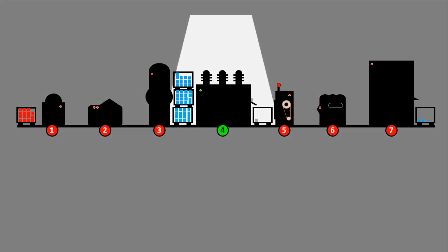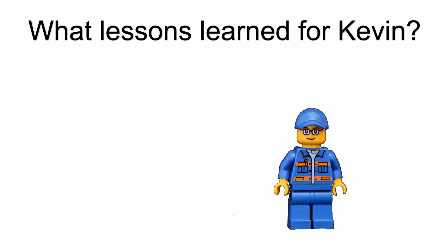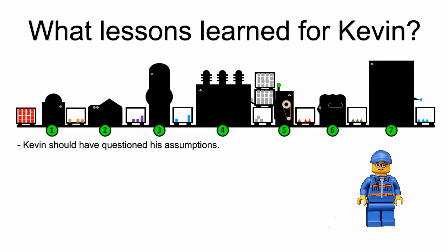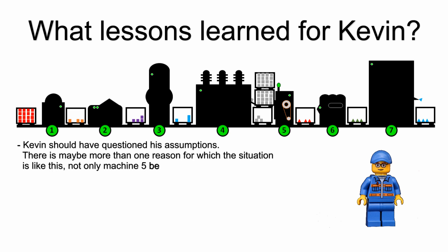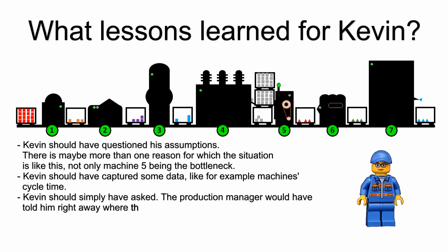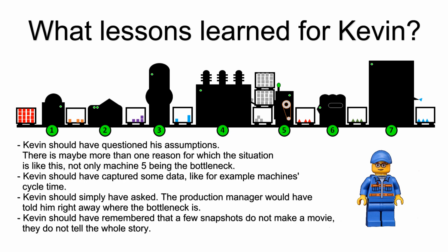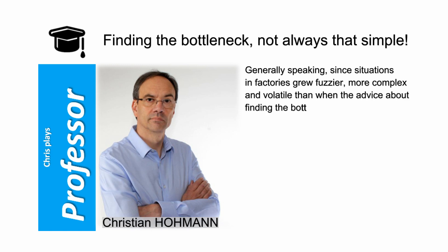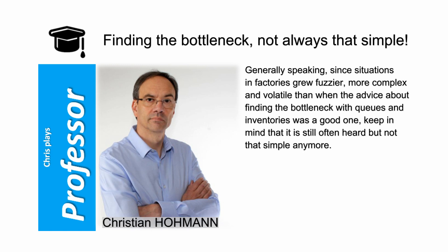What lessons learned for Kevin? Kevin should have questioned his assumptions — there may be more than one reason for the situation, not only machine 5 being the bottleneck. Kevin should have captured some data, like machines' cycle times. Kevin should simply have asked — the production manager would have told him right away where the bottleneck is. Kevin should have remembered that a few snapshots do not make a movie; they do not tell the whole story. Generally speaking, since situations in factories have grown fuzzier, more complex, and more volatile, the advice about finding bottlenecks with queue and inverse trees was once a good one — keep in mind it is still often heard but not that simple anymore.